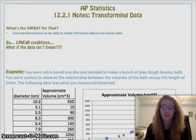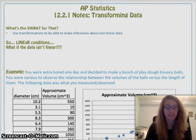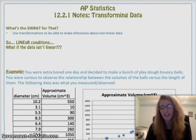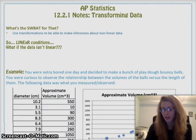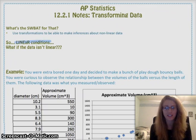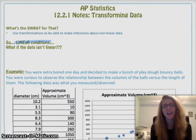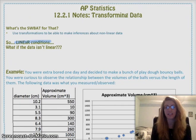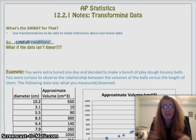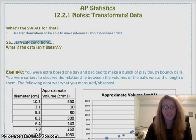Remember, when you started making hypothesis tests for scatter plots, your conditions are the linear conditions: linear, independent, normal, equal variance, and random. The question we're going to answer today is: what do we do if the data isn't linear? Because sometimes, unfortunately, we just don't have linear data.